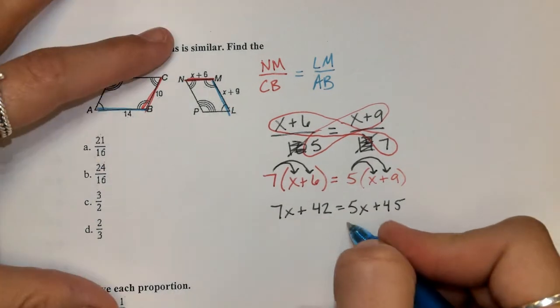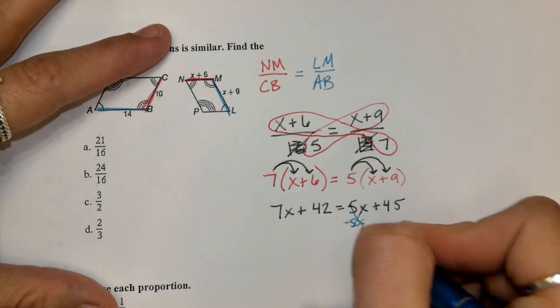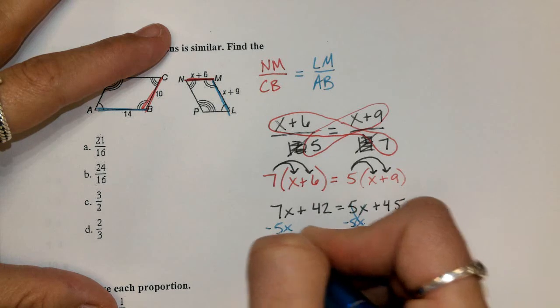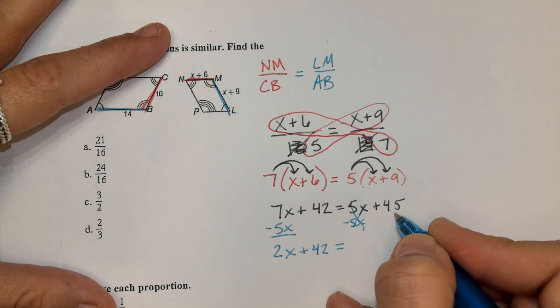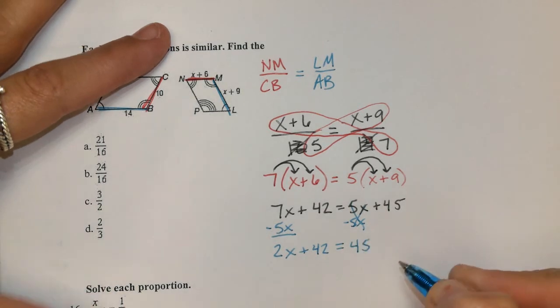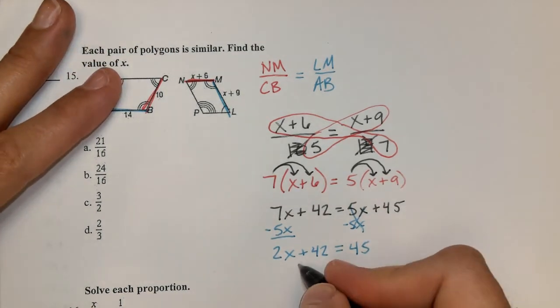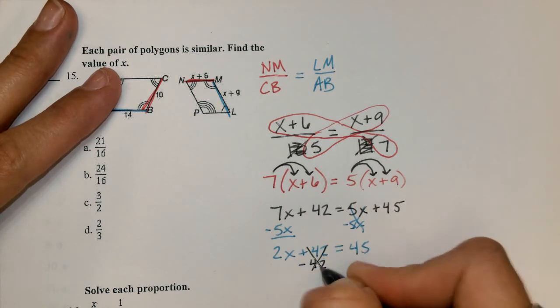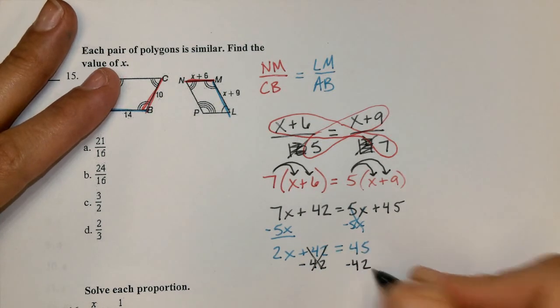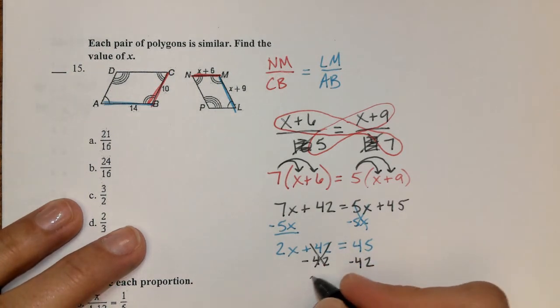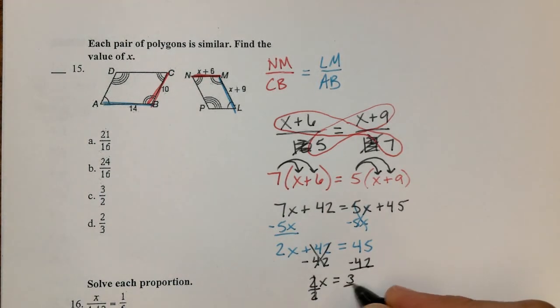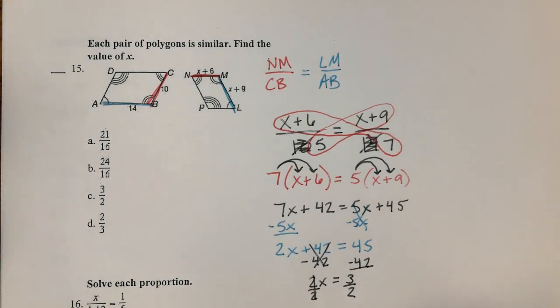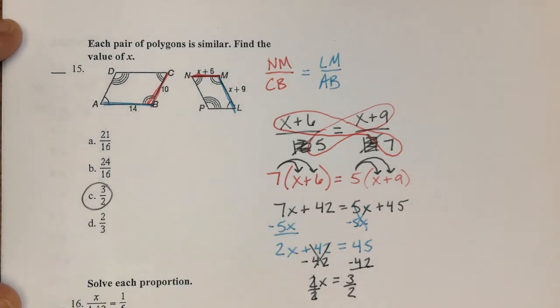I'm going to go ahead and move my variable here. Get rid of that 5X on the right. Move it over here. So we're going to wind up with 2X plus 42 equal to, bring that 45 down. Next step, move the 42. Subtract it to get rid of it. So now we're left with 2X equals, we're only going to be left with 3. So when we divide both sides by that 2, we're going to get 3 over 2, which is one of our answer choices right here.